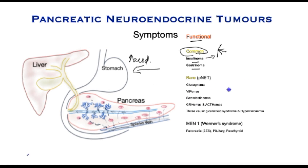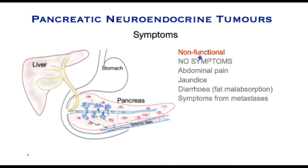There are several other rarer functional pancreatic neuroendocrine tumours with their own symptom complex. It is not uncommon for these to be diagnosed quite late, often taking several years, because of the rarity of these tumours and the symptoms they produce may not readily indicate the cause. The great majority of non-functional tumours do not cause any symptoms for a very long time until they get quite big and can actually be palpated in the abdomen.